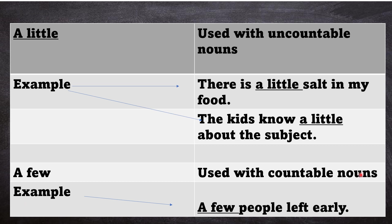A little is used with uncountable nouns. Example: there is a little salt in my food. The kids know a little about the subject. You can see all these are uncountable nouns.